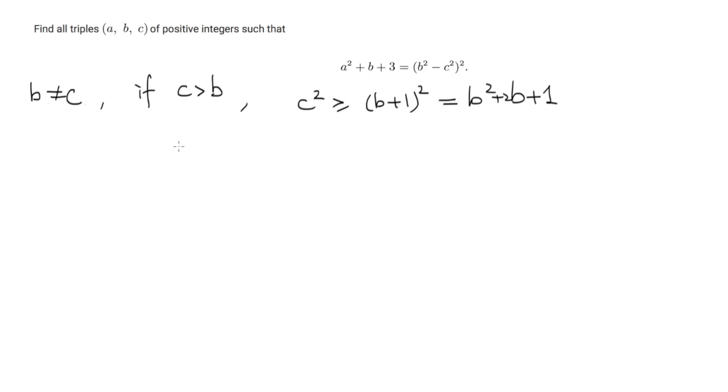Now let me rewrite the equation in the following way. Indeed, we have b + 3 = (c² - b²)² - a². So now we can factorize this term as (c² - b² + a)(c² - b² - a). It is easy to see that this term must be larger than 1 because it is an integer.